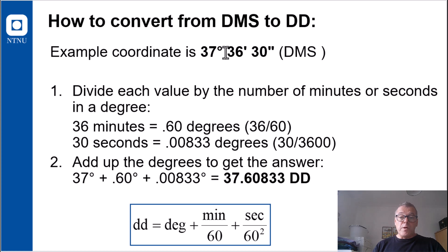And we have 36 minutes. So we need to divide 36 by 60, which is 0.6. And we have 30 seconds, which needs to be then divided by 3600, because we have 3600 seconds in a degree. 60 by 60. And then you just simply add up the degrees to get the answer.